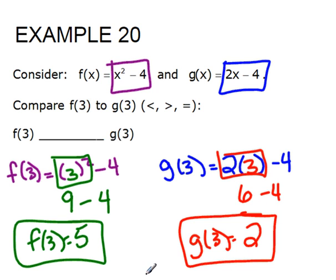Both of these are positive numbers, and I hope you know that 5 is definitely going to be greater than 2. It's just a little bit bigger. If you have $5, that's definitely more than $2. So f of 3 is going to be greater than g of 3.